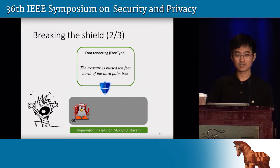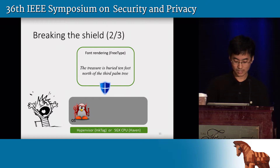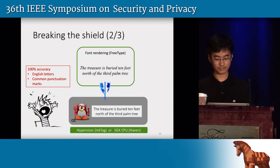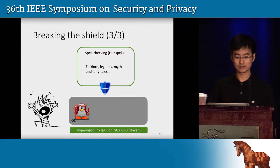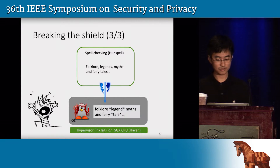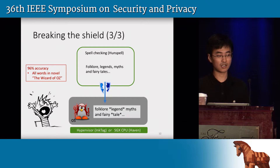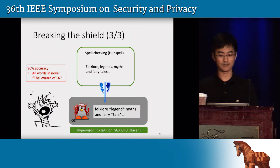Second, suppose a user got a secret message and wants to display it using some font rendering library like FreeType. We found that the OS can actually reconstruct the whole message with perfect accuracy. And last, suppose a user wants to spell check a text file using a tool like Hunspell. We found that the OS can reconstruct most of the words in a document, although some words have affixes removed. In our experiment, we spell checked the entire novel The Wizard of Oz and found the attacker can get around 96% accuracy.